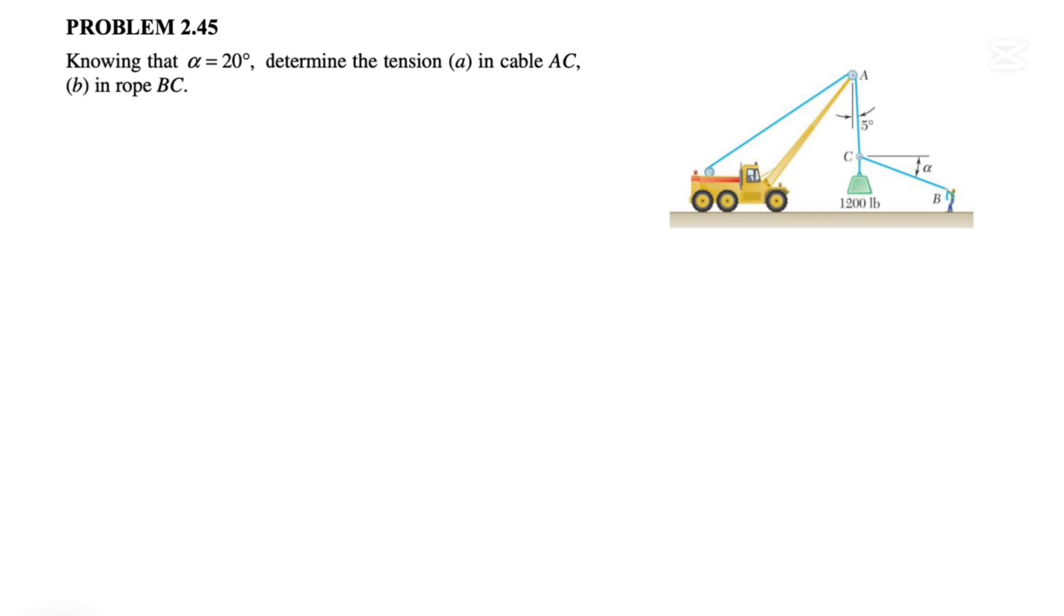In this one we know that the angle alpha is 20 degrees and we need to determine the tension in cable AC and in rope BC. So we are in equilibrium and if we look at point C,